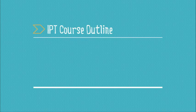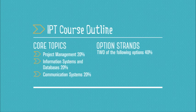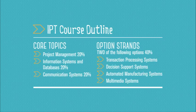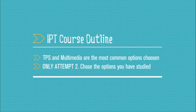The IPT course is divided into three core topics: Project Management, worth 20%; Information Systems and Databases, also worth 20%; and Communication Systems, worth 20%. Then you have a couple of option strands that usually your teacher selects for you - there's Transaction Processing Systems, Decision Support Systems, Automated Manufacturing, and Multimedia. Transaction Processing Systems and Multimedia are probably the most common. It's important that you only attempt two of those option topics in the HSC exam, and only the ones that you studied.